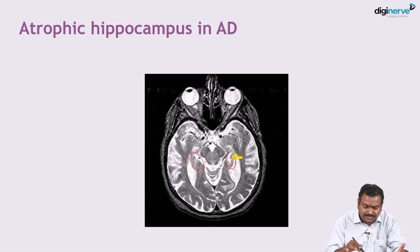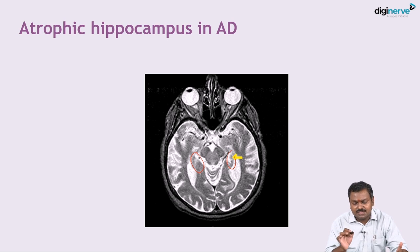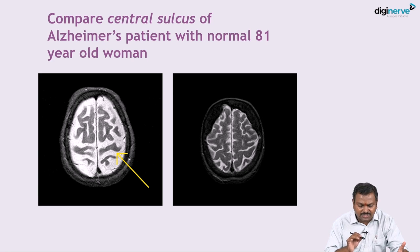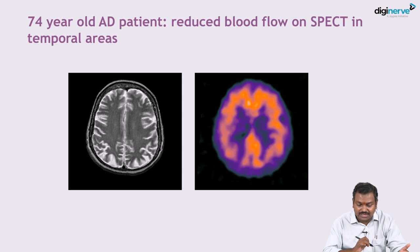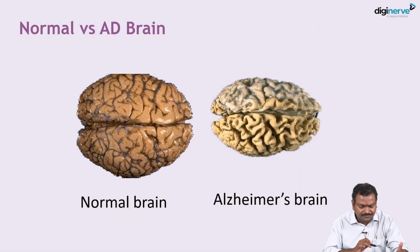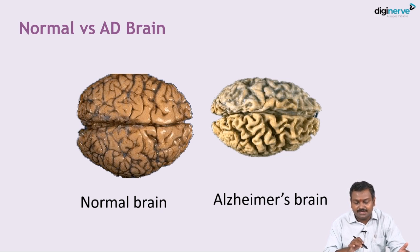On MRI, bilateral hippocampal atrophy can be seen in Alzheimer's disease, though it is not highly specific. Comparing the central sulci of an Alzheimer's patient with a normal brain, an 81-year-old Alzheimer's patient shows gross decrease in sulci and significant atrophy. In a 75-year-old Alzheimer's patient, SPECT imaging shows reduced blood supply specifically in the temporal areas.